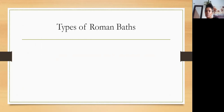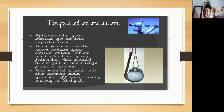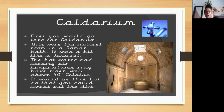There were different types of Roman baths. First, the caldarium: this was the hottest room in the Roman bath, a bit like a jacuzzi. The hot water and steamy air temperatures may have risen well above 40 degrees Celsius so that you could sweat out the dirt. Afterwards, you would go to the tepidarium. This was a cooler room where you could relax, chat with your friends, and get a massage from the slaves. You would clean all the sweat and grease off your body using a strigil.